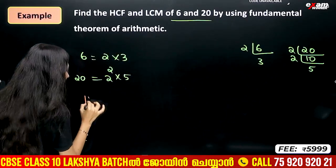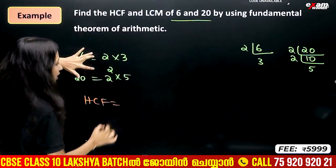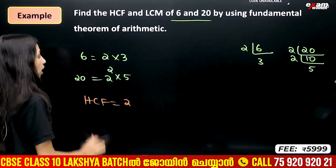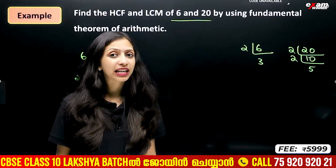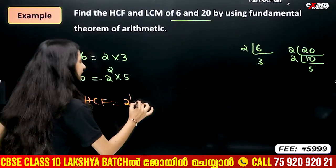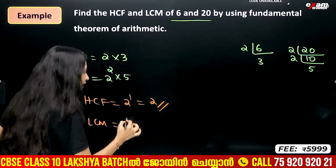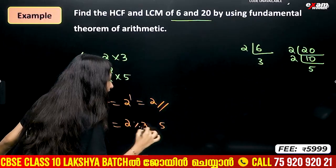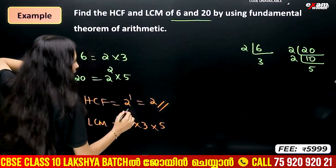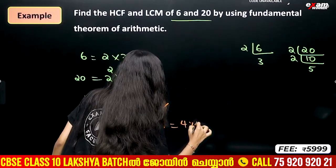Now, HCF is the product of common factors at their least power. The common factor between 6 and 20 is 2. So HCF is 2. For LCM, we take all factors — 2, 3, and 5 — at their highest powers.